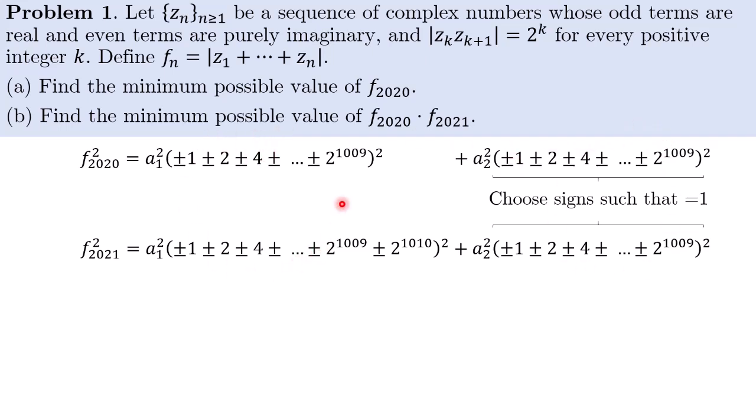However, for the real term, we need to be slightly more careful because if we, let's say, choose the sign such that this is equal to 1, then we have in the bottom, we have 1 plus or minus 2^1010 and we cannot make that equal to 1. So the moral of the story is basically we cannot choose the sign simultaneously such that both terms are equal to 1. So this is where we need to do a bit more work.